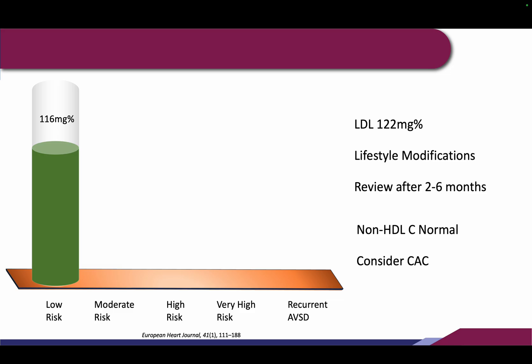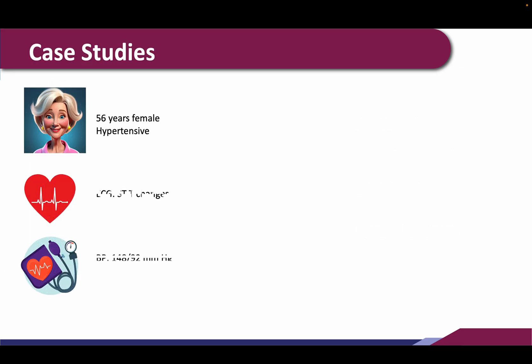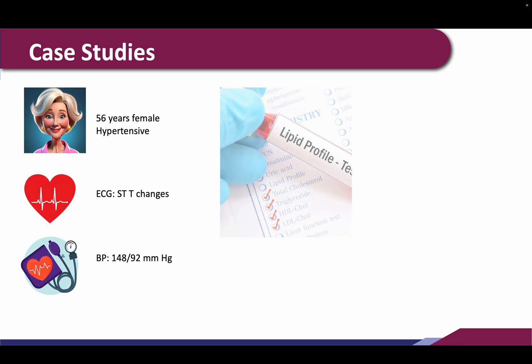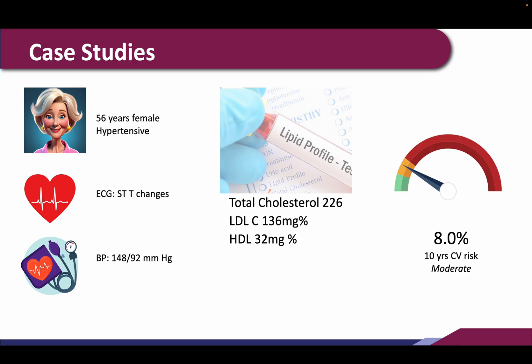That's how we can upgrade the category if a risk modifier is present. The second patient is a 56-year-old female who is hypertensive. The lipid profile shows total cholesterol of 226 with an LDL of 136. According to the high-risk zone, she falls in a moderate risk category — that is between 5 to 10 percent cumulative CVD risk.